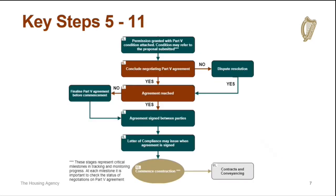If planning permission is granted, we proceed to Step 5, where a Part 5 condition is attached to the grant of planning. After planning is granted, both parties conclude negotiations on the Part 5 Agreement. If agreement cannot be reached, dispute resolution mechanisms are available.